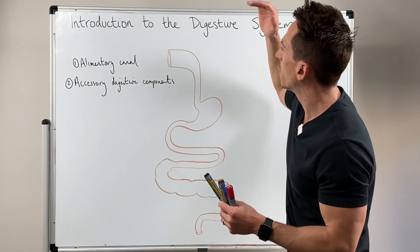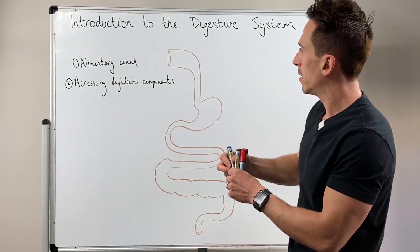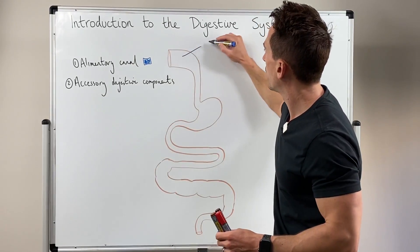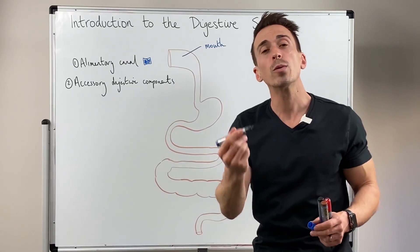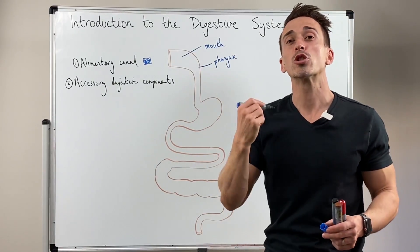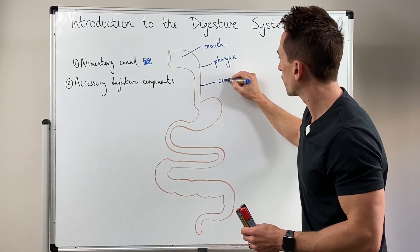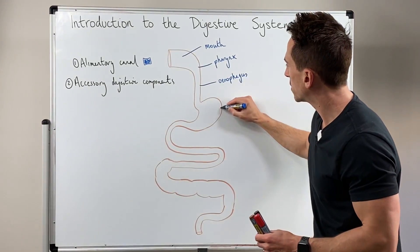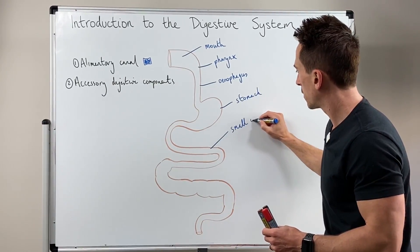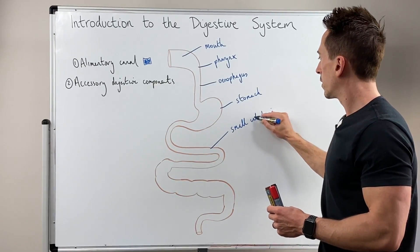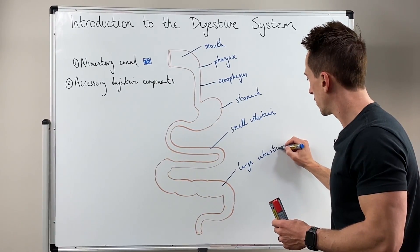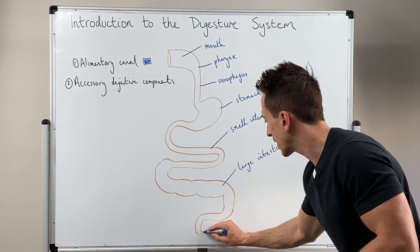So the first thing I want to do is go through the various aspects of the alimentary canal, and I'm going to do this in blue. First thing is the mouth. Then we go down to the pharynx, which is the back of the throat. Then we go to the esophagus, then the stomach, then the small intestines, and then we move through to the large intestines. Now the large intestines — right at the very end, which is the final structure of the alimentary canal — is that of the anus.